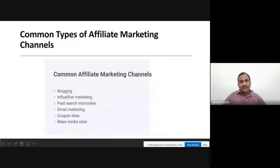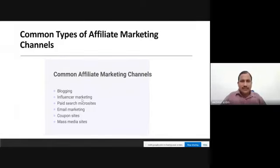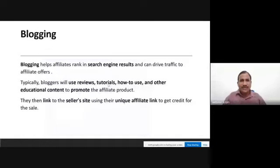What are the common types of affiliate marketing channels? First is blogging — you find your passion and the segment you like to write about, and through that you can do affiliate marketing. Second is influencer marketing — if you are a good influencer, motivational speaker, doctor, or yoga expert, you can promote products related to your niche with affiliate links. Other channels include paid search micro-sites, email marketing, coupon sites, and mass media sites.